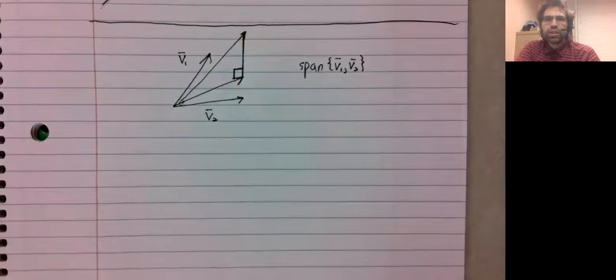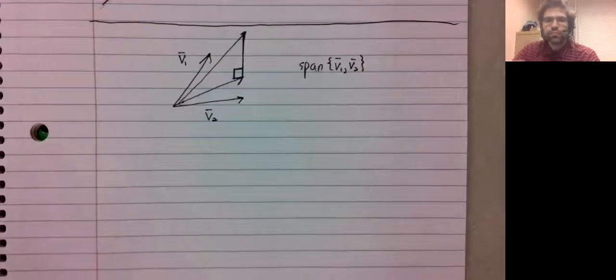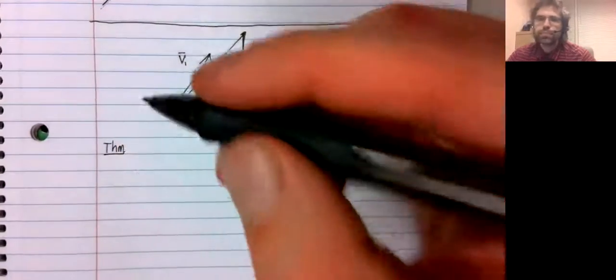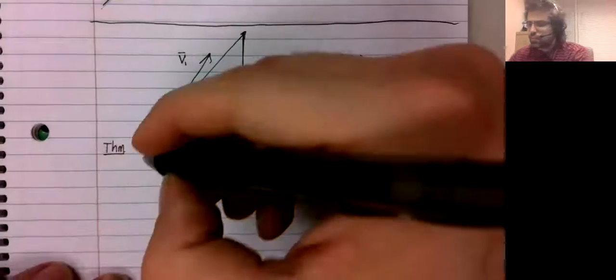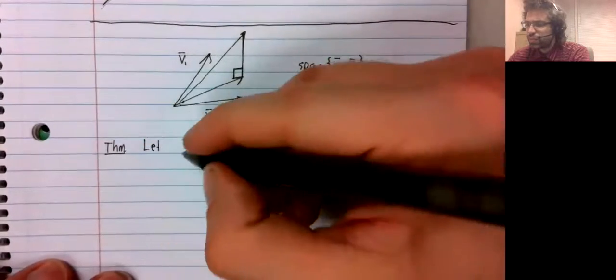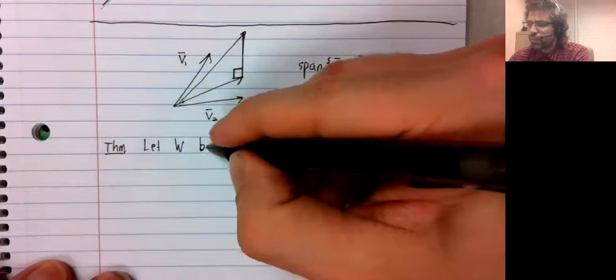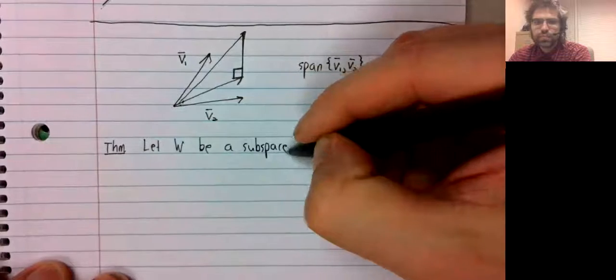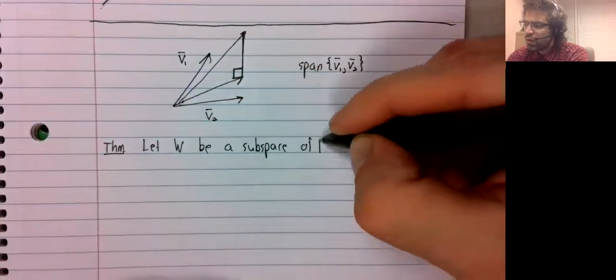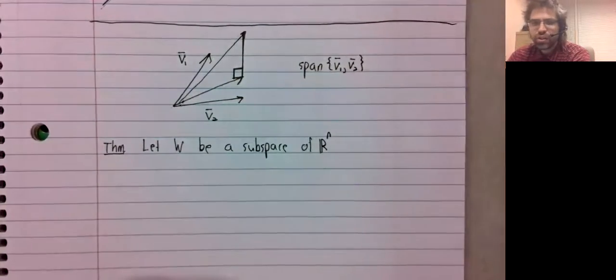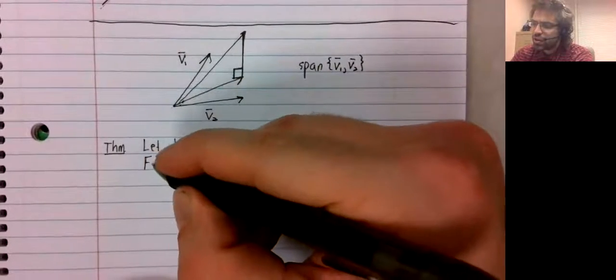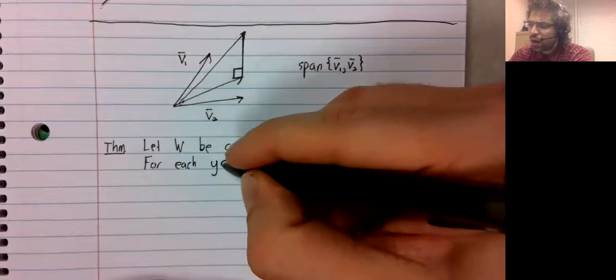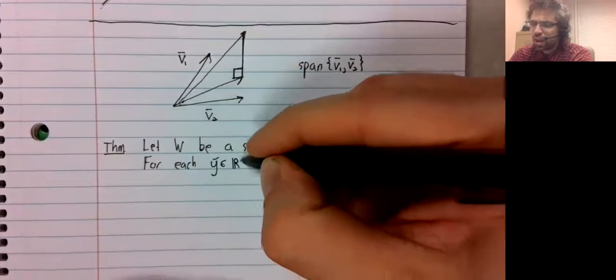Let's nail this down. Let W be a subspace of Rn. Then, for each y in Rn,